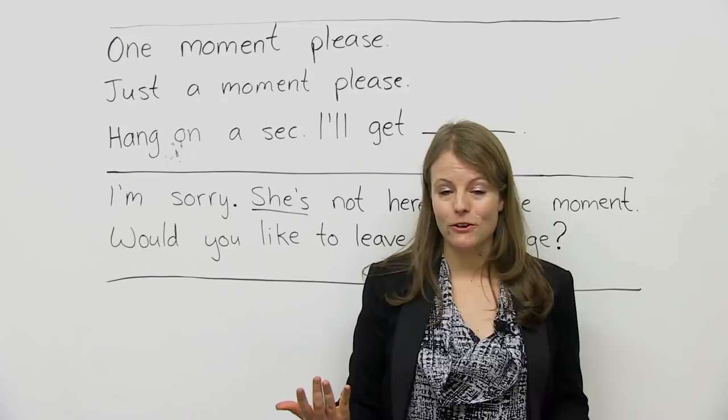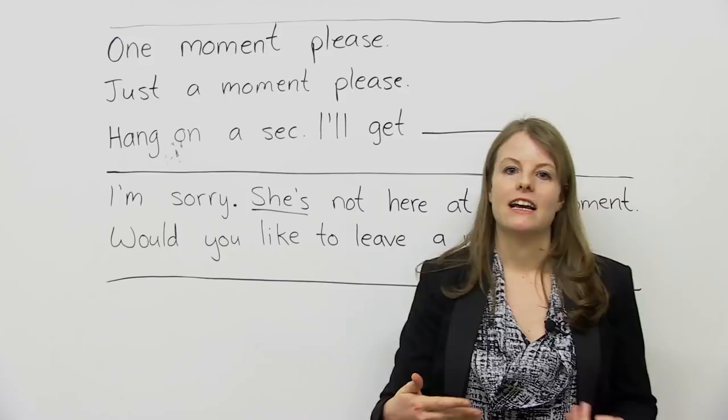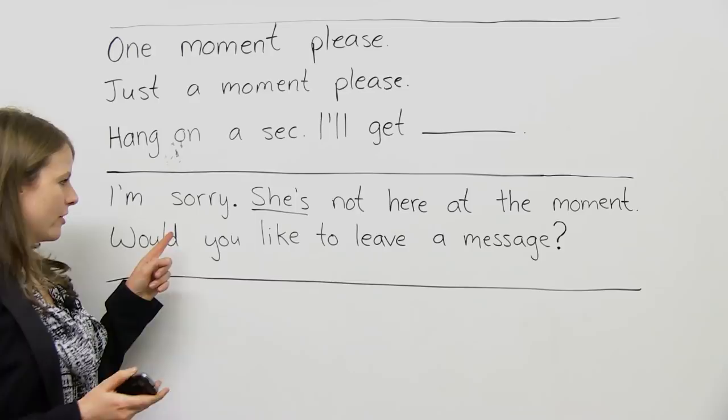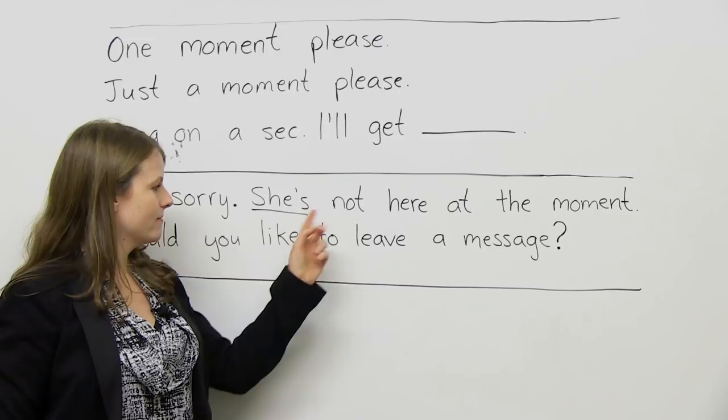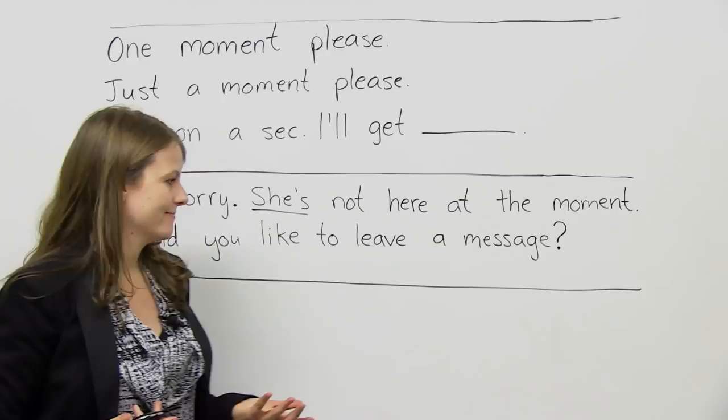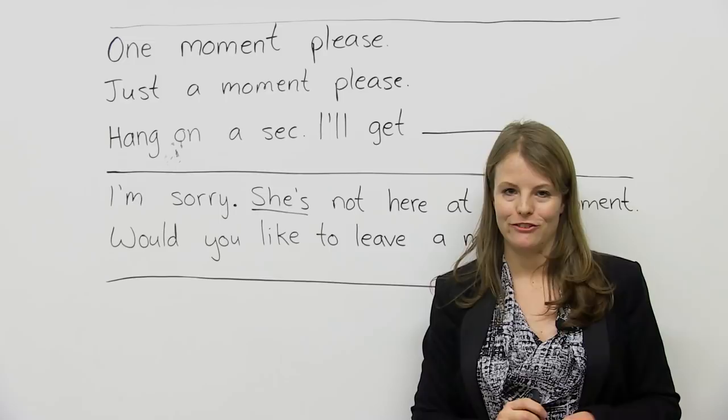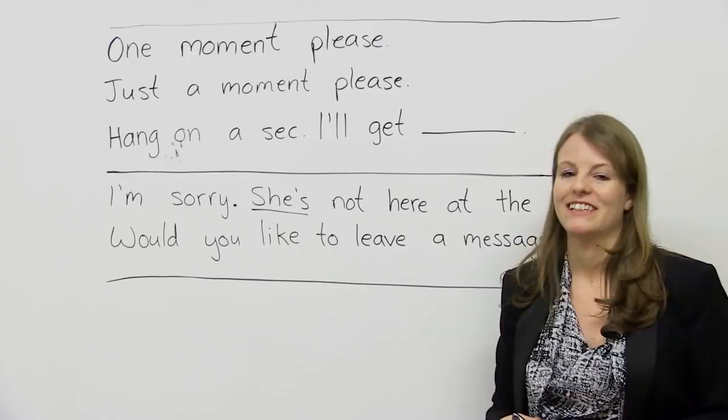All right. So what comes after this in a phone conversation usually? If the person asked for someone like Frank, maybe Frank isn't there. You say this if Frank is there. If Frank's not there, you can say something like this. You can say, I'm sorry, she or he. He, she... She's not here at the moment. She's not here right now. Would you like to leave a message? I'm sorry, Emma's not here at the moment. Would you like to leave a message? I'm sorry, Frank's not here at the moment. Can I take a message?